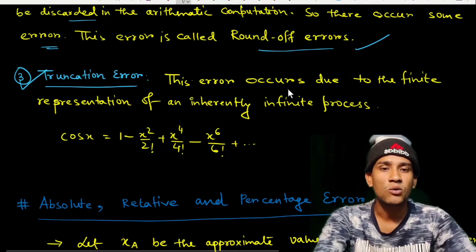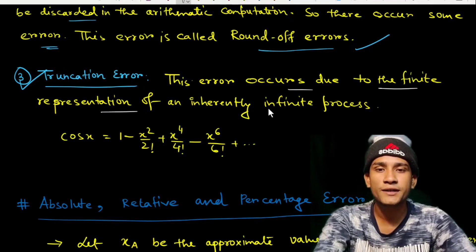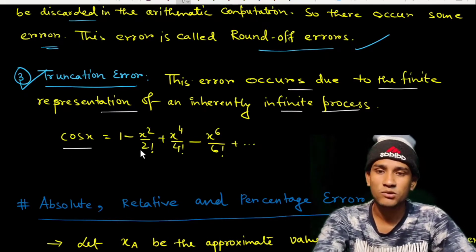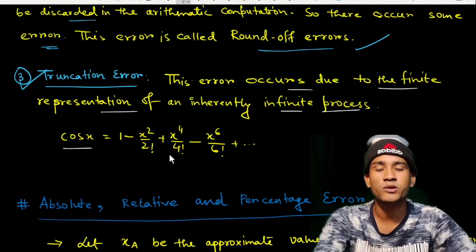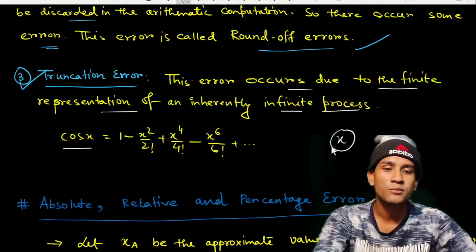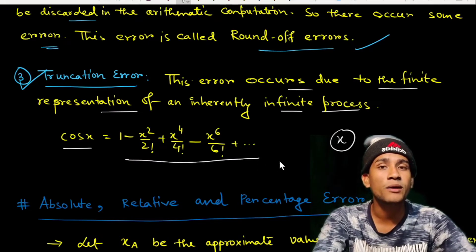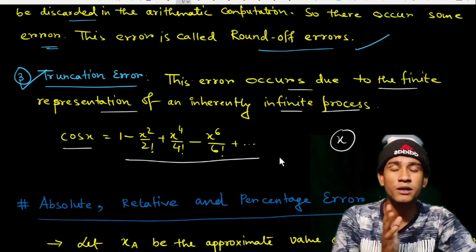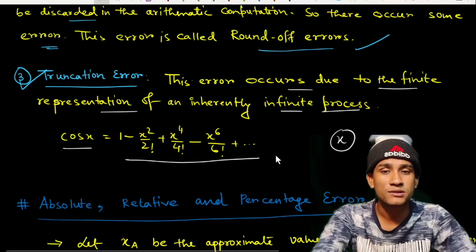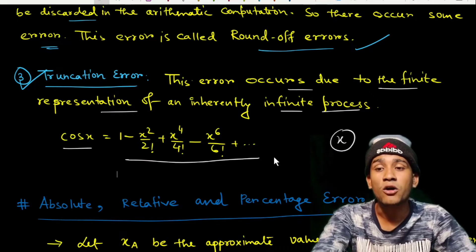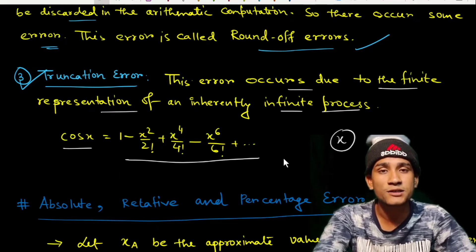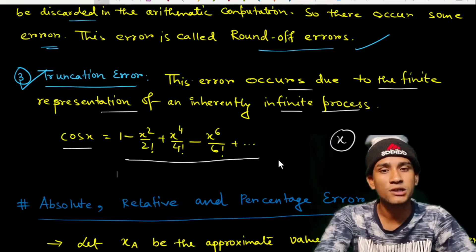The third source is truncation error. This error occurs due to the finite representation of an inherently infinite process. For example, the series for cos(x) is 1 − x²/2! + ... and so on — an inherently infinite series. If we calculate the value of cos(x) using only the first five terms, the remaining terms from the sixth onward are excluded from computation. The resulting error is called a truncation error.